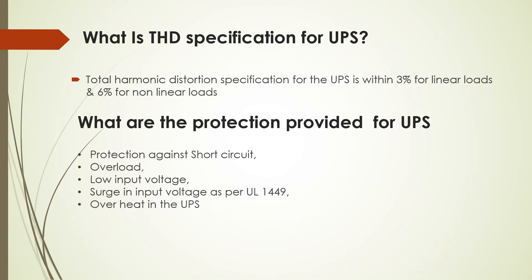What is the THD specification for UPS? Total harmonic distortion specification for UPS is within 3% for linear loads and 6% for non-linear loads. What are the protections provided for UPS? Protection against short circuit, overload, low input voltage, surge in input voltage as per UL1449, and overheat in the UPS.